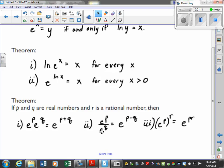Good. When you divide like bases, you subtract the exponents. And here, when you have a power raised to a power, you multiply. So this is e to the p times r.